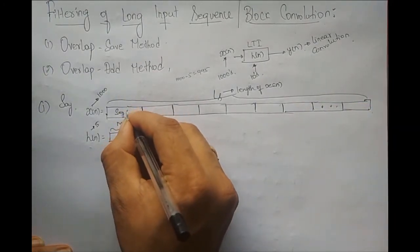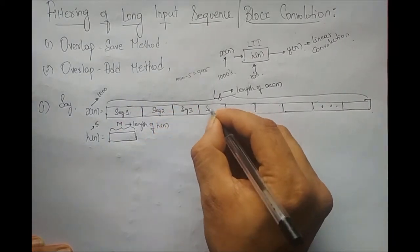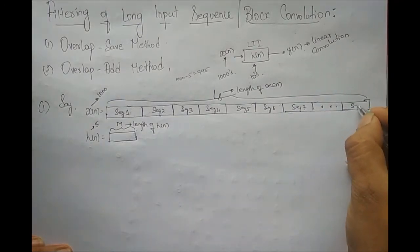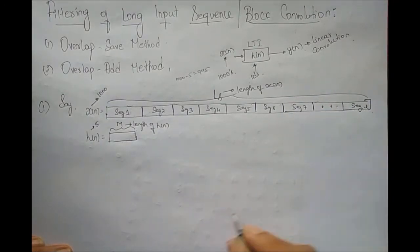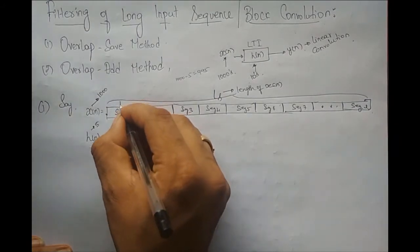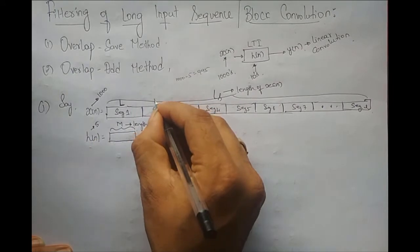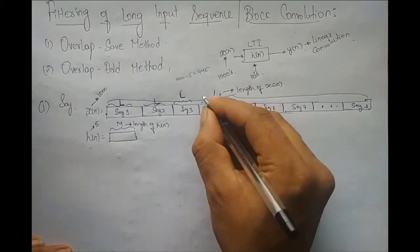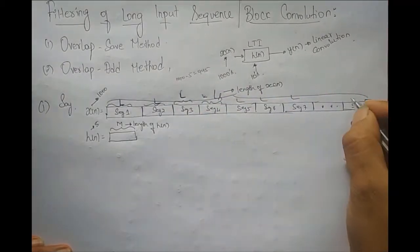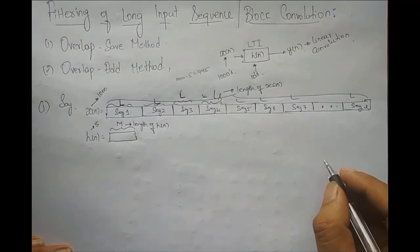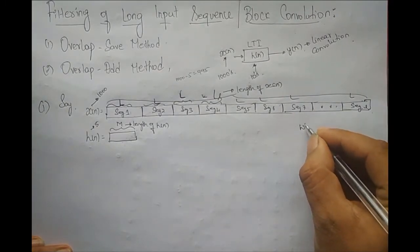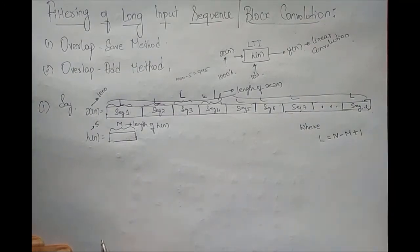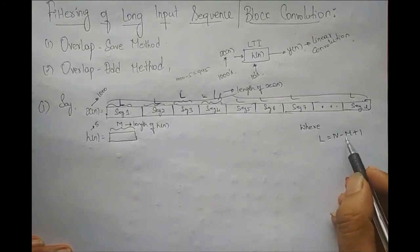We call the segments: segment 1, segment 2, segment 3, segment 4, 5, 6, 7, and so on up to segment L. The length of each segment is capital L — all segments have the same length, which is capital L. Where L is given by N minus M plus 1, and N is called the block length. M is the length of the impulse response h of n.